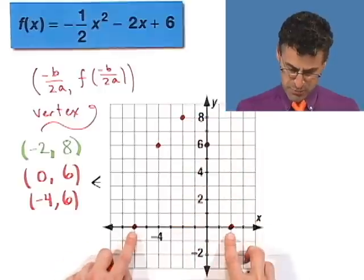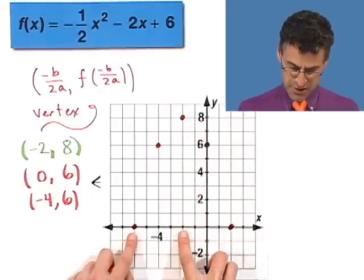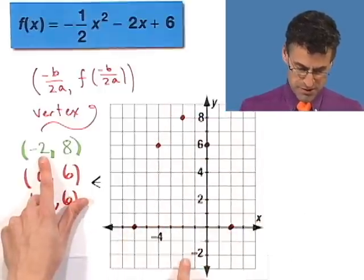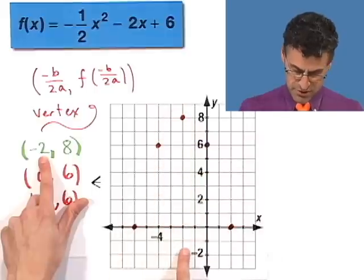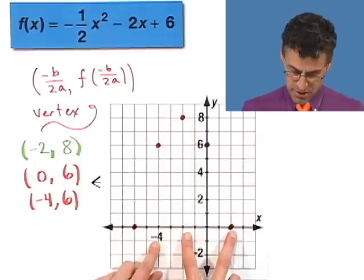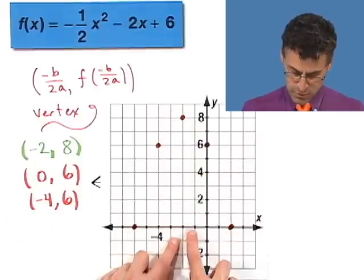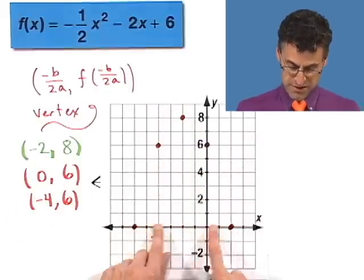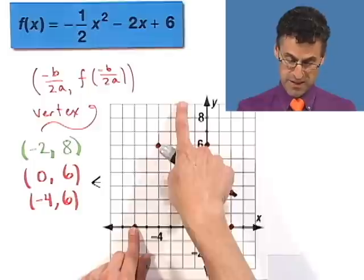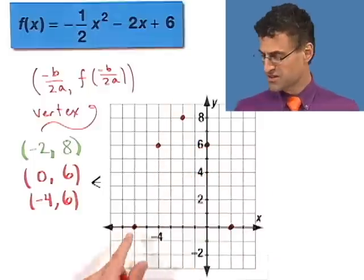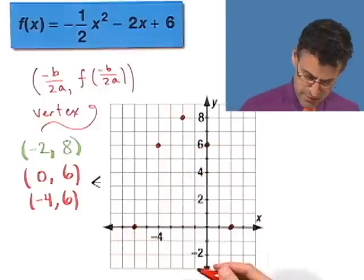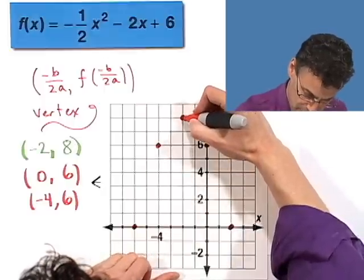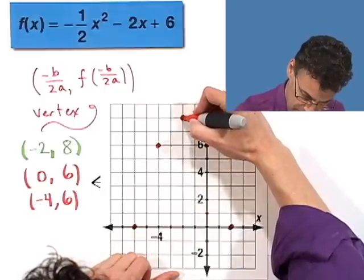We can check our answer — are these two points symmetric over the line x equals negative 2? They sure are: negative 6 is 4 units to the left of negative 2, and 2 is 4 units to the right. They're the same distance away from that center point. You can plot more points if you want.